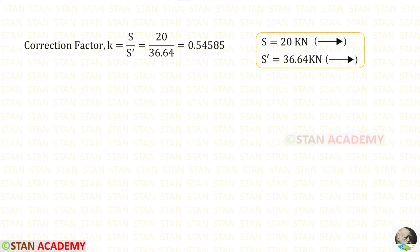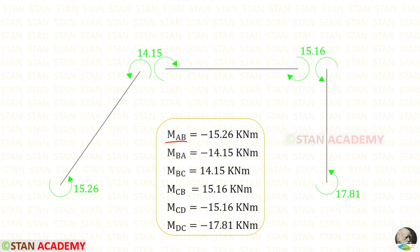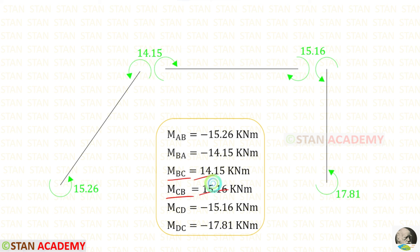Now let us find the correction factor K using the formula S upon S'. We have found both S and S', so applying them gives us the value of K. Now let us make a table: first entering all the sway moments, then multiplying the sway moments by the correction factor to get the real final moments. For MAB, MBA, MCD, and MDC we have got negative values, meaning all of them are acting in the anticlockwise direction. For MBC and MCB we have got positive values, meaning both are acting in the clockwise direction.